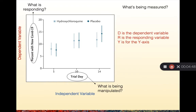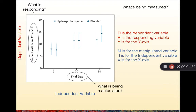We can do something similar with the variable that's being manipulated. The acronym for that is MIX — M is the variable being manipulated, I is the independent variable, and X is for the x-axis. Together we have the final acronym DRY MIX. A scientist might say: our dependent variable was the number of new patients with COVID, and our independent variable was our trial day. From that we're able to understand the trends of new patients with COVID-19 for those that received hydroxychloroquine and those who received placebo.